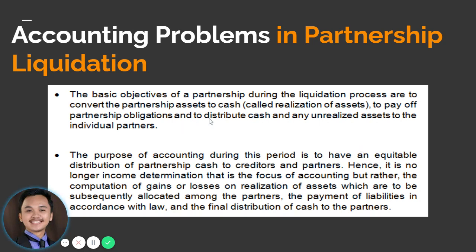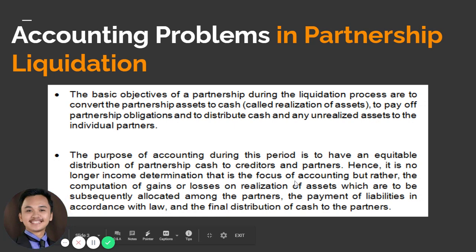The basic objectives of a partnership during the liquidation process are: to convert the partnership assets to cash — that process is called the realization of assets or conversion of non-cash assets into cash — to pay off partnership obligations, and to distribute cash and any unrealized assets to the individual partners. The purpose of accounting during this period is to have an equitable distribution of partnership cash to creditors and partners. The focus is no longer income determination, but rather the computation of gains or losses on the realization of assets, which are to be subsequently allocated among the partners, the payment of liabilities in accordance with the law, and the final distribution of cash to the partners.